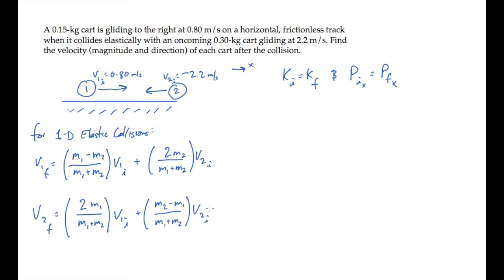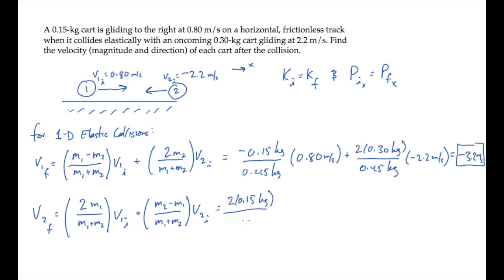And now given these two expressions, we can just substitute in the known masses and initial velocities. The difference in the masses, m1 minus m2, is negative 0.15 kilograms, and the sum of the masses is 0.45. Substitute the velocities, remembering that v2 initial is negative, because it's going to the left in the negative x direction. And you find that after the collision, cart one has a velocity of minus 3.2 meters per second.